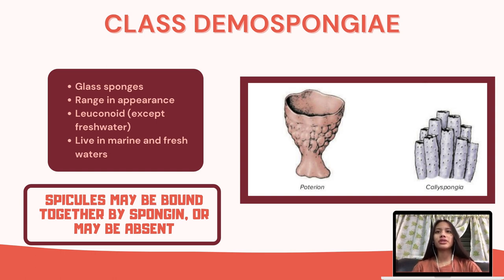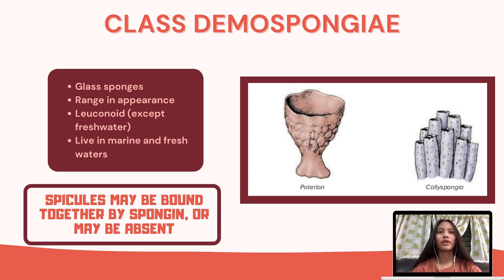Class Demospongiae contains 95% of living sponges. Like Hexactinellida, their spicules are siliceous, but are not six-rayed. Their spicules may be bound together by spongin or may be absent. All members of this class are leuconoid, except freshwater sponges. Their appearance varies — some may be tall and finger-like, while others are low and spreading, and some can even grow several meters in diameter. Freshwater sponges are widely distributed in well-oxygenated ponds and streams. They do reproduce sexually, but existing genotypes may also appear from gemmules.